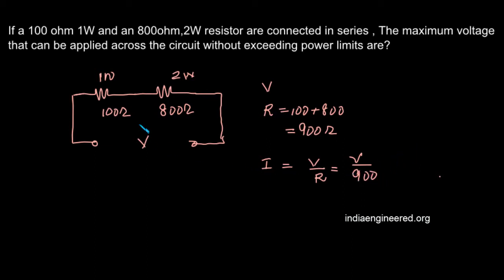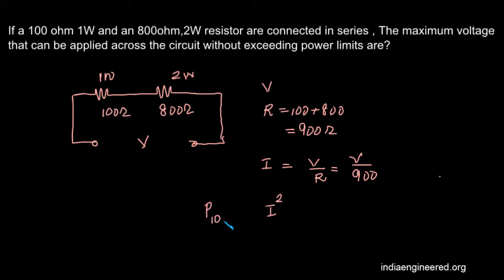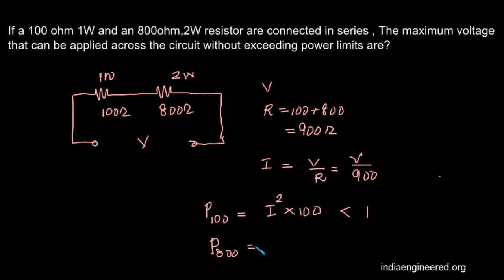The power dissipated by the 100 ohm resistor will be I squared times R, that is I squared times 100. It is given that it can dissipate a maximum of 1 watt, so this power should be less than 1 watt. The power dissipated across the 800 ohm resistor will be I squared times 800, and this must be less than 2 watts.